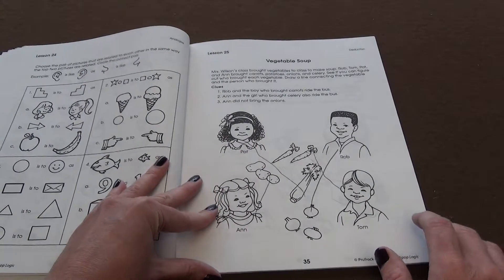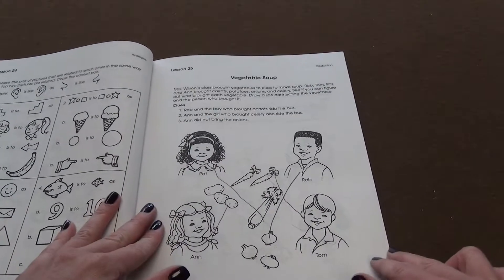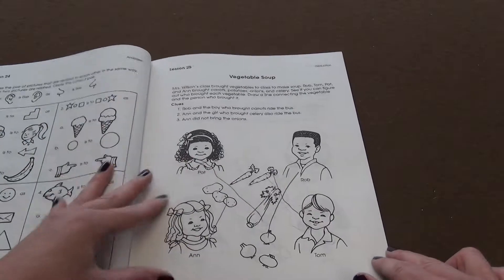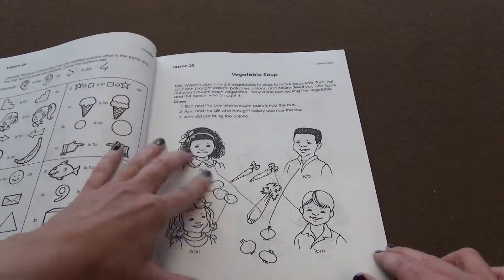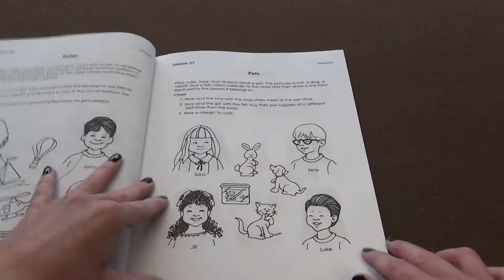Then it goes into deduction. This part you would probably need to help your reader read more than likely, especially if they're in kindergarten and in first grade. You would need to read these and help with the clues.